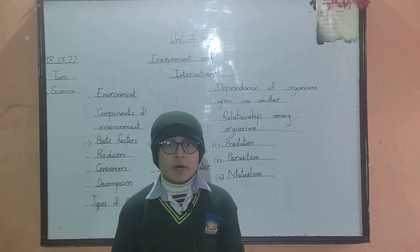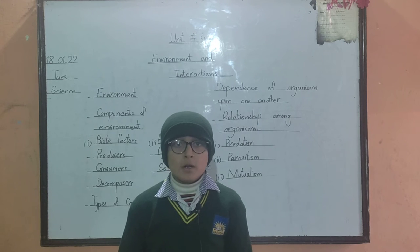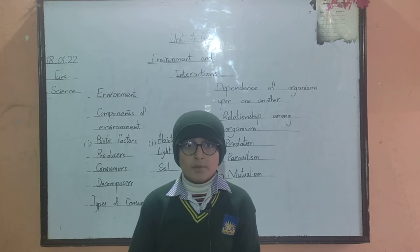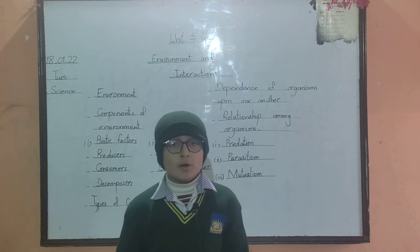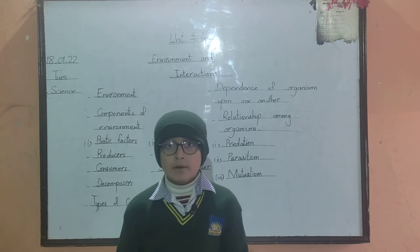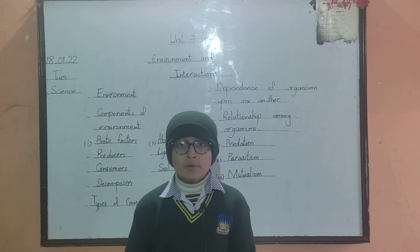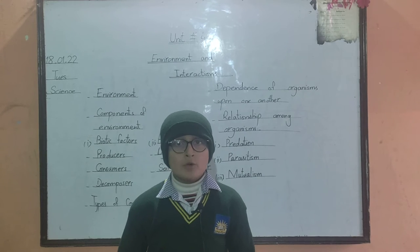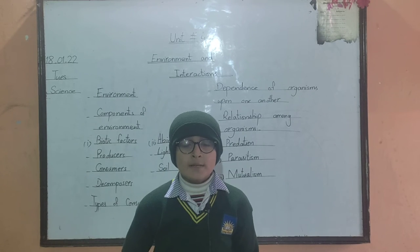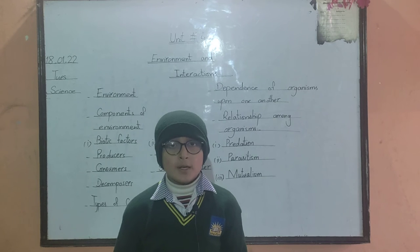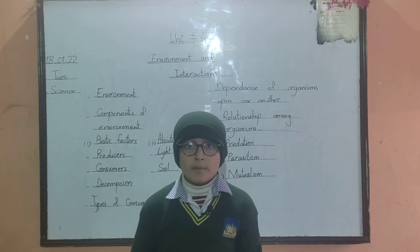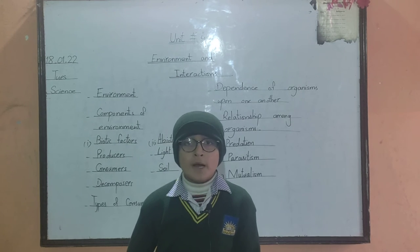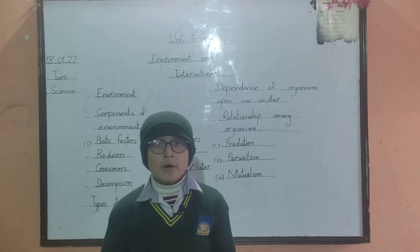There are three types of biotic factors: producer, consumer, and decomposer. Producers can make their own food, like plants. Consumers cannot make their own food, like humans. Decomposers break down dead bodies of animals and plants.